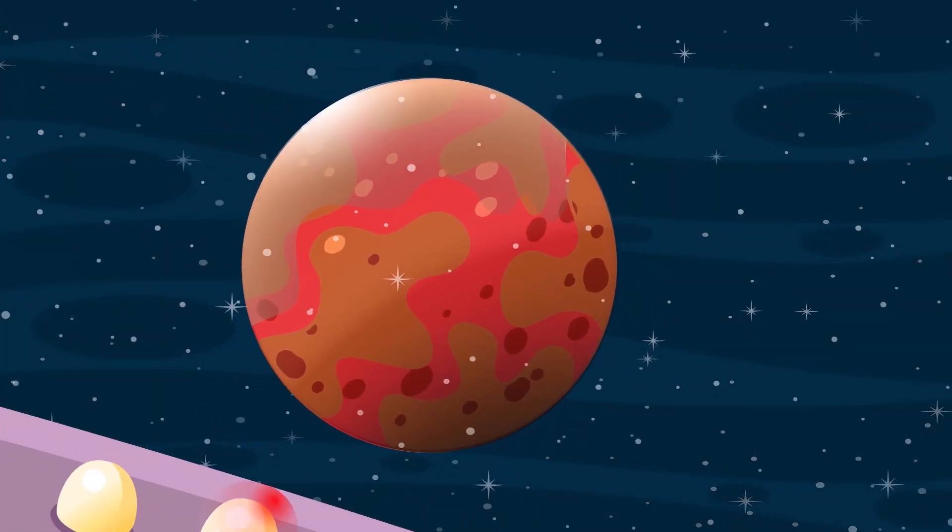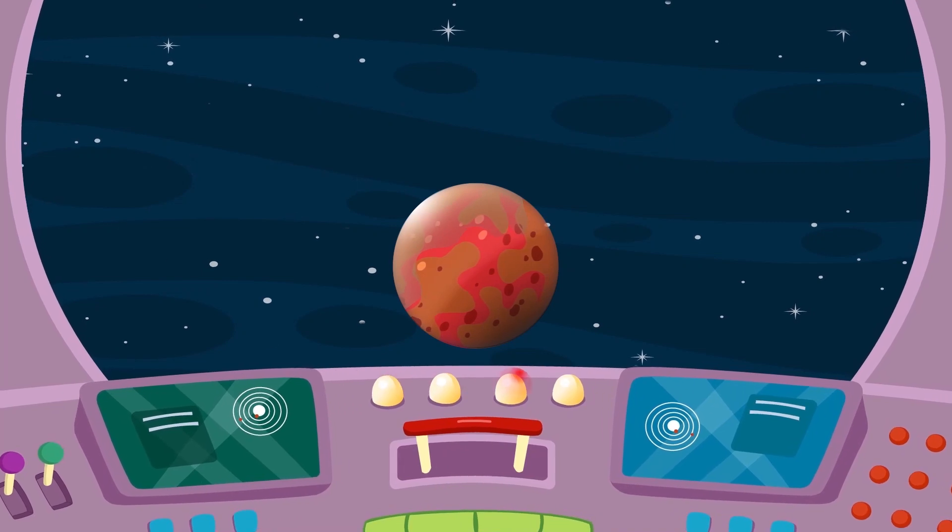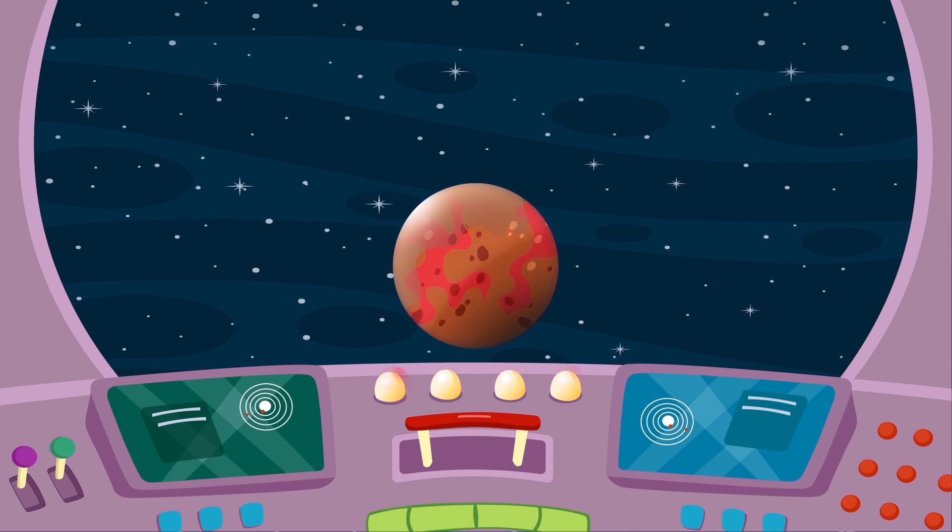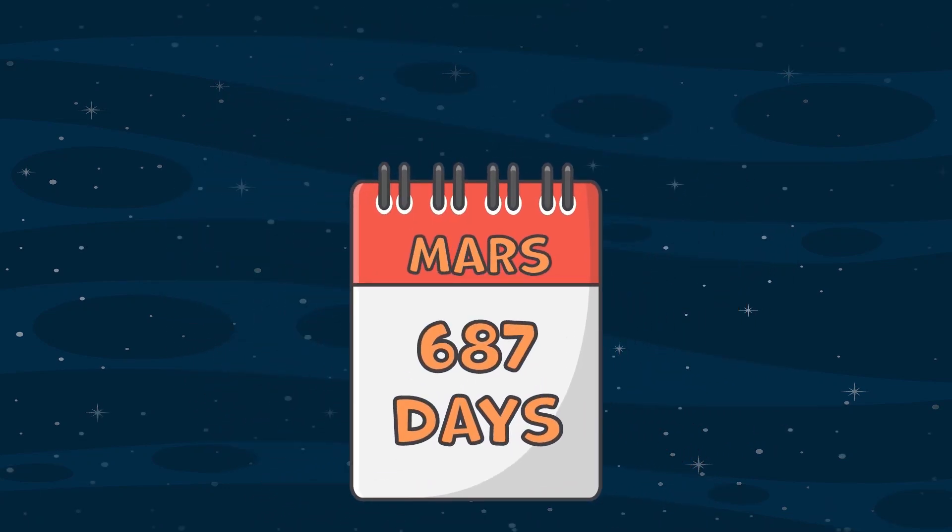The next stop is the red planet Mars. Mars is the second smallest planet in the solar system after Mercury, roughly half the Earth's size. A year in Martian time lasts 687 Earth days.